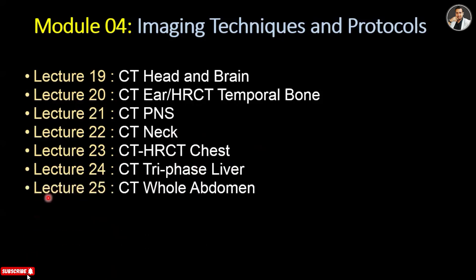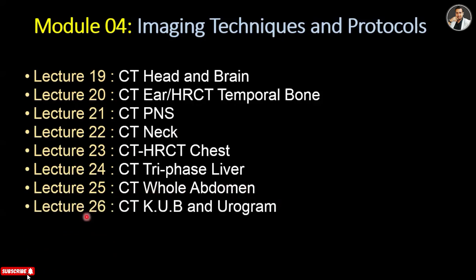Lecture 25 is CT whole abdomen — covering preparation, important techniques, how to perform it, and indication planning. Lecture 26 covers CT KUB and urogram. Two techniques are included: one is KUB only and one is with urogram. Both are very important CT scans.